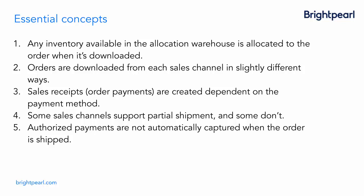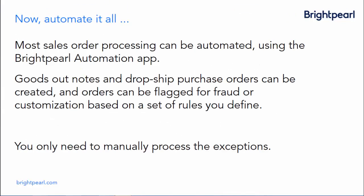Sales receipts are created in Brightpearl when the customer pays, dependent on the payment method — so whether it's PayPal, check, money order, or credit card. Have a look at the documentation for each specific sales channel for more information. Similarly, only some sales channels support partial shipment, so perhaps you'd ship half an order now and half an order later, and that works in different ways depending on the store you have connected. Finally, authorised payments are not automatically captured when the order is shipped, so you'd need to do that manually. Most sales order processing can be automated using the Brightpearl automation app, so goods out notes and dropship purchase orders can be created, or orders can be flagged for fraud or customisation, based on a set of rules you define — so you only need to manually process the exceptions.